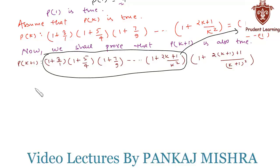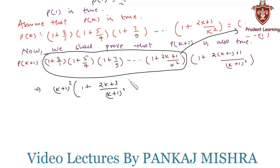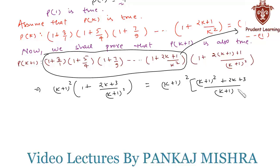We have the value of the first part from equation 1 as (k+1)². Substituting it, we get (k+1)² × (1 + (2k+3)/(k+1)²). Taking (k+1)² as the LCM, this gives ((k+1)² + (2k+3)) / (k+1)². We can cancel (k+1)² from numerator and denominator.